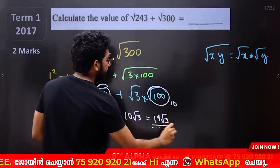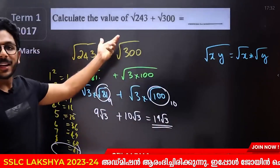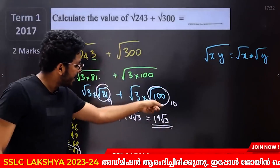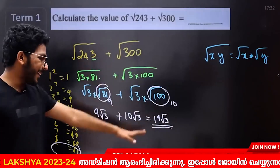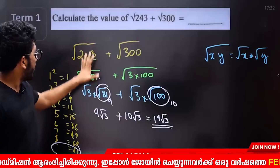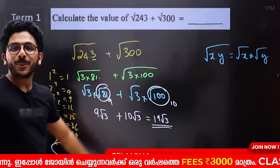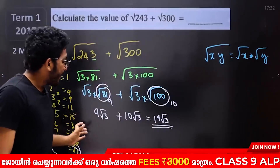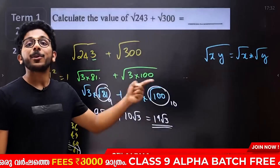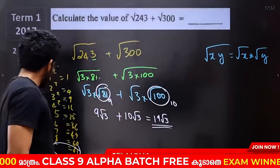The answer is 19 root 3. It's not a simple answer by itself. If you think 19 root 3 is not a root, that's not a correct simplification. Now you have 9 root 3 plus 10 root 3. Let's move to the next question.